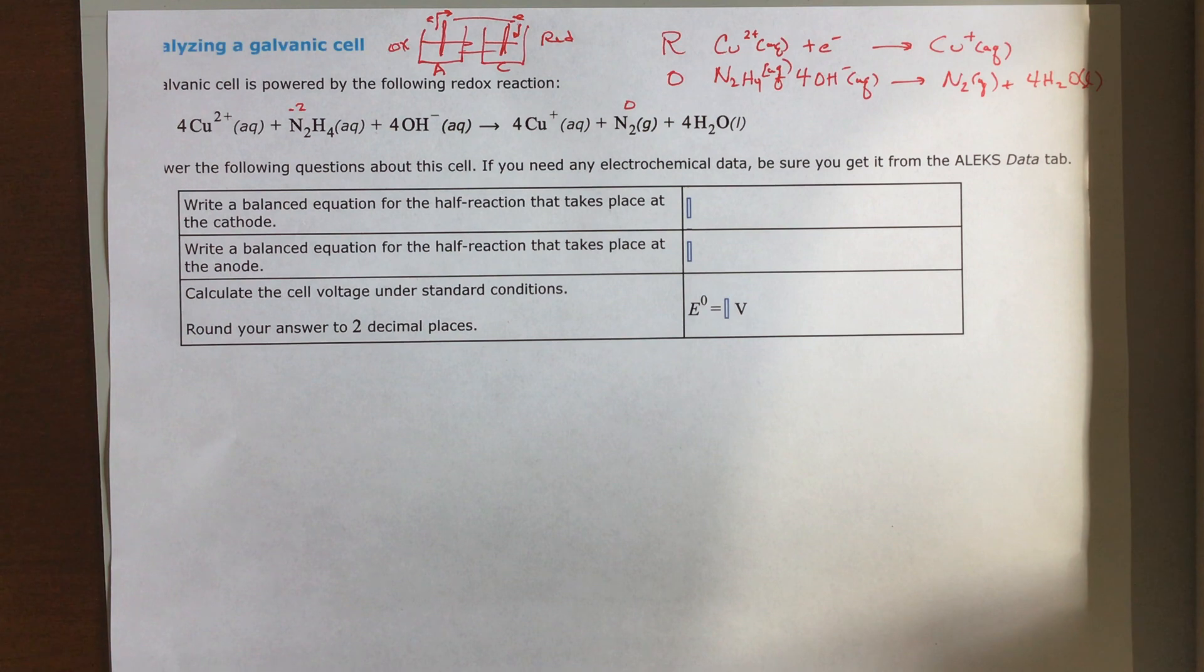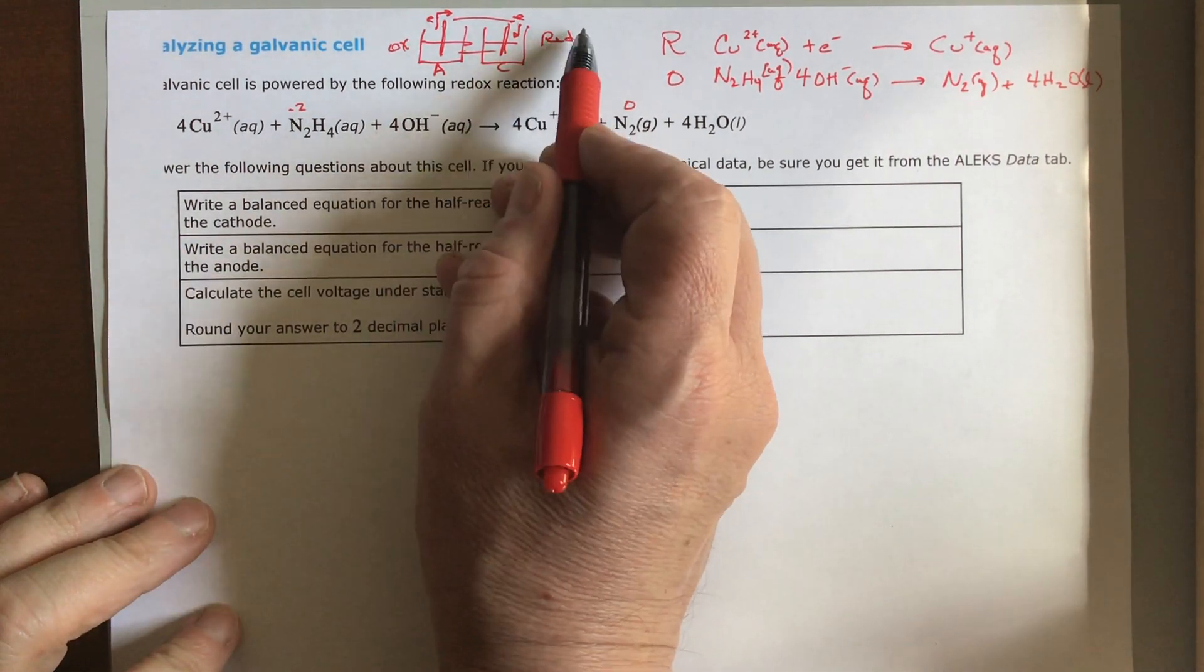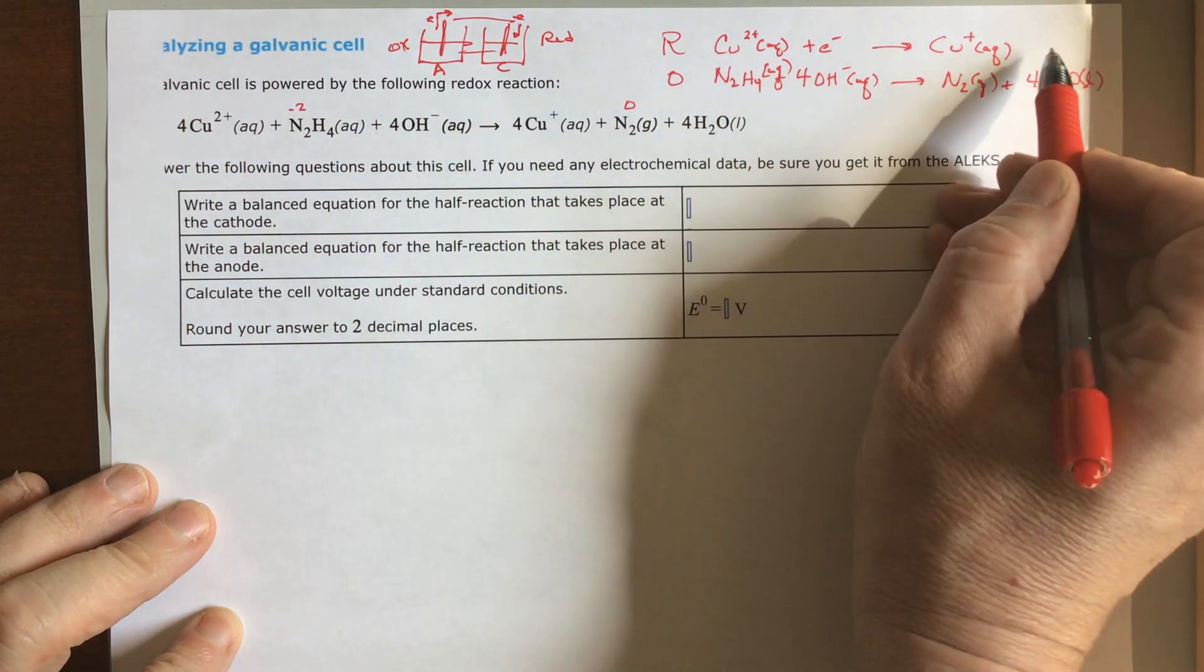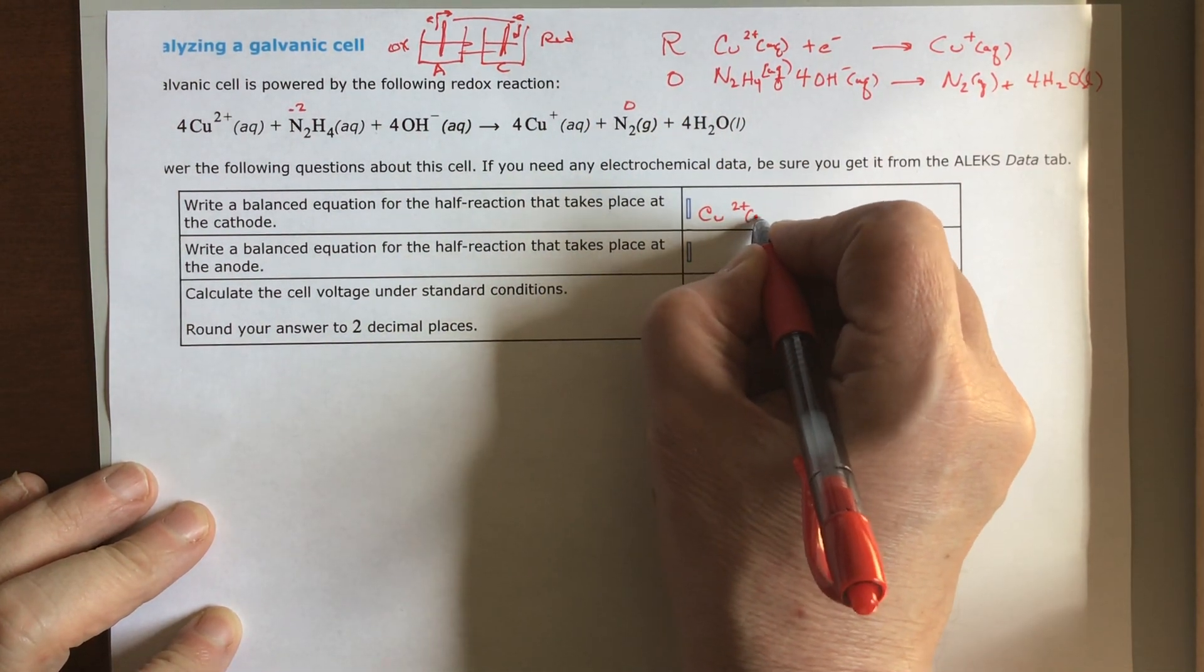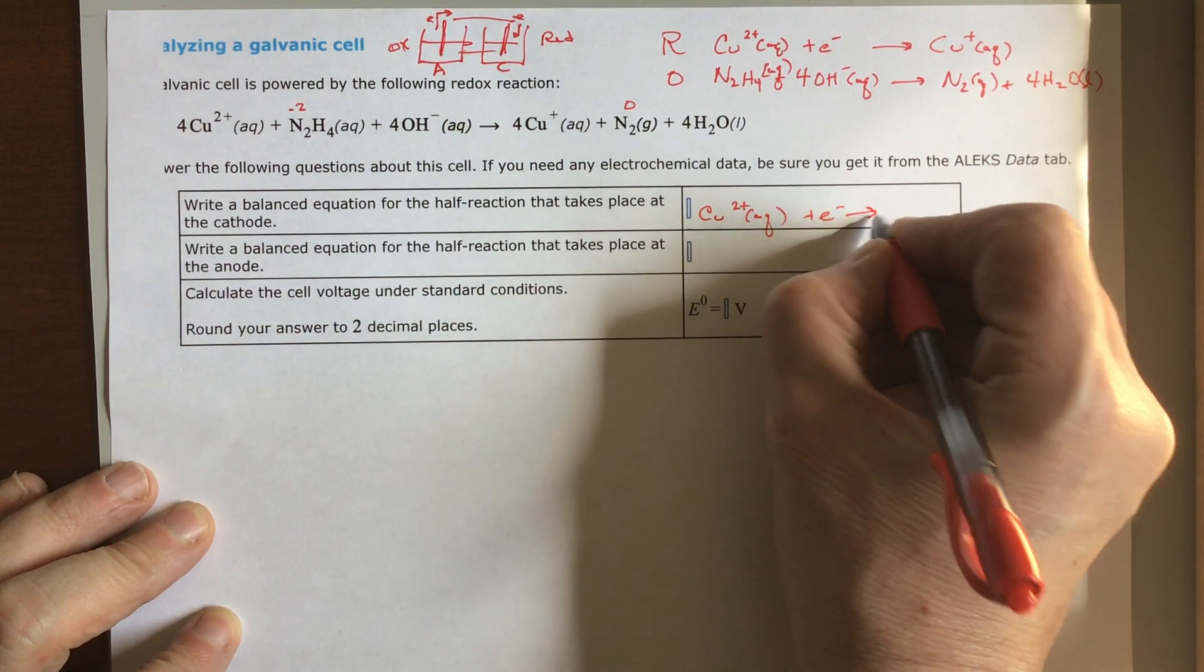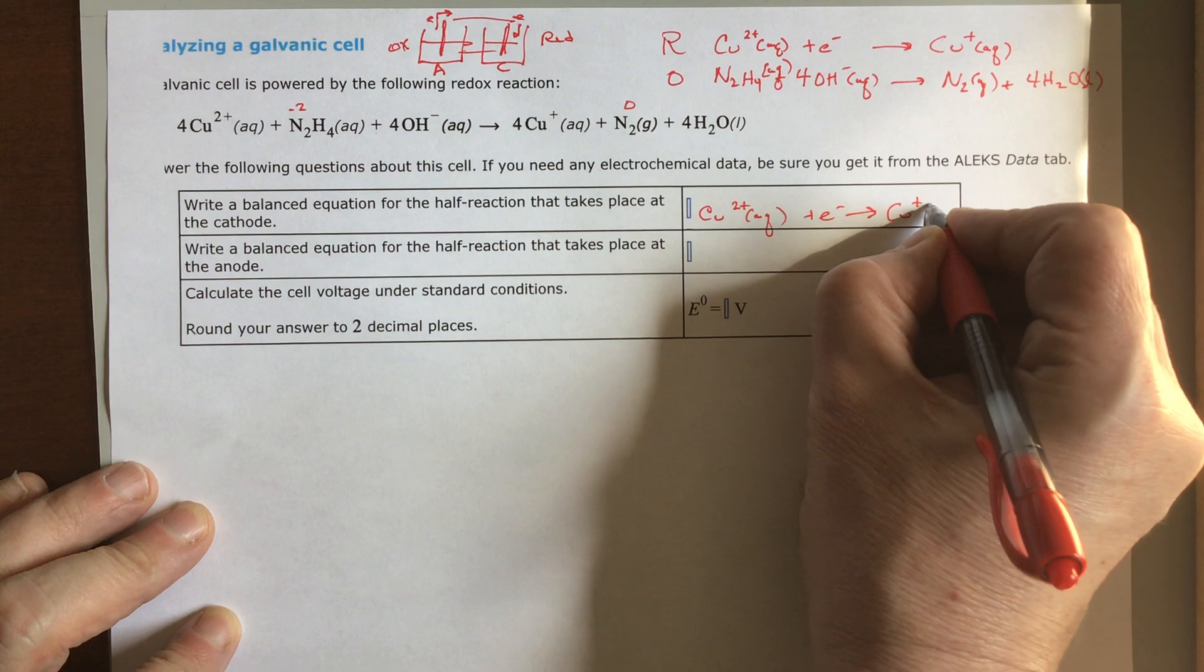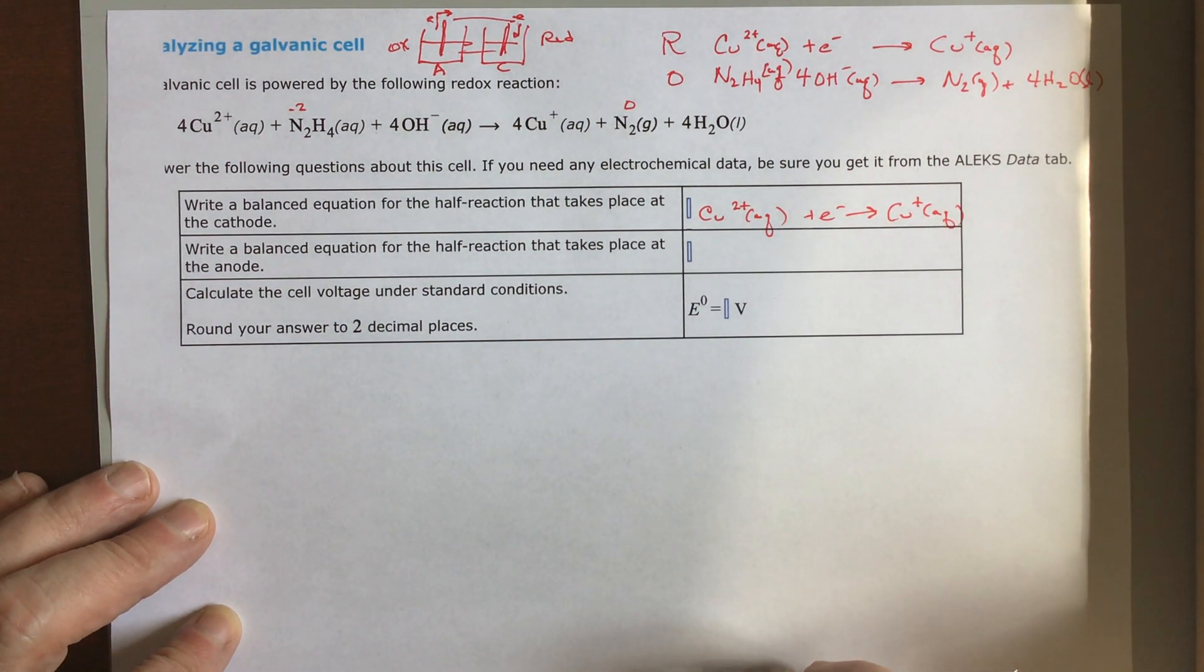So the first question they ask is write a balanced equation for the half reaction that takes place at the cathode. Well, here's the cathode, and so we want the reduction step. So this is Cu2+ aqueous plus electron yields Cu+ aqueous. That's happening at the cathode, that's reduction.